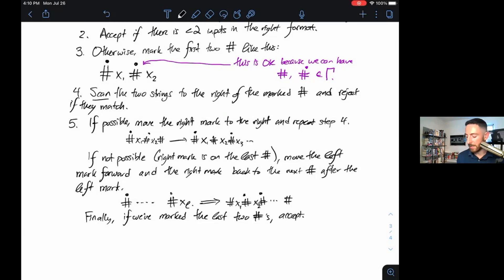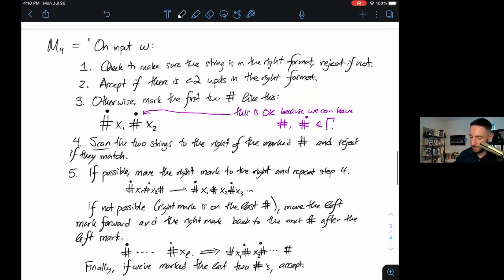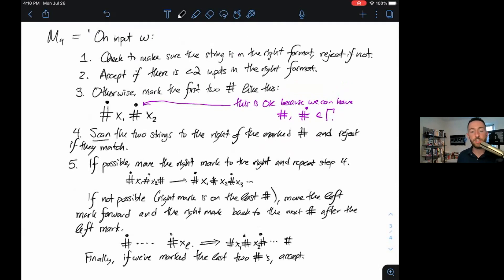Finally, if we've marked the last two pound signs, accept. In this particular case, if we see our two marks around the last two pound signs on the far right, that means we have checked every single pair of inputs. We've rejected if any pair of them were the same. None of them must have matched, and in this case, we can finally accept. We have this program for machine M4, this mark mover.